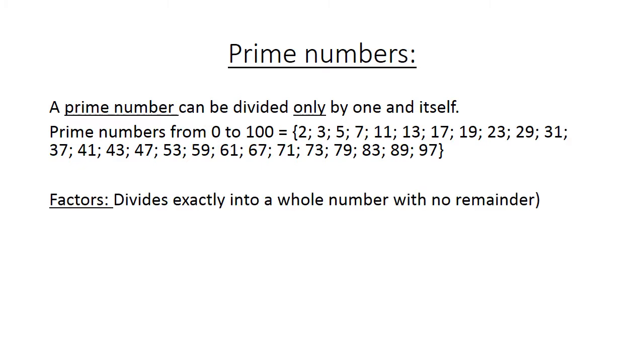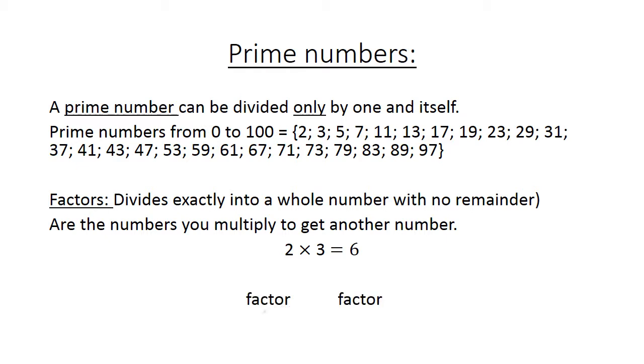Factors divide exactly into a whole number with no remainder. Factors are the numbers you multiply to get another number. If you look at this, 2 times 3 equals to 6. 2 is a factor and also 3 is a factor.